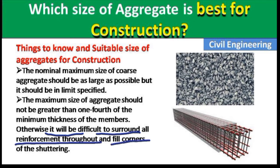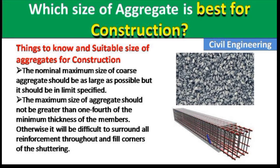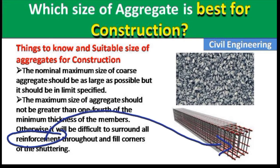Otherwise it will be difficult to surround all the reinforcement and fill the corners of the shuttering. If we use a larger size of aggregate in members like beams, slabs, or columns, the aggregate will not reach the corners of the shuttering and it will affect the strength of the concrete. Reinforcement here means the steel rods used in the structural member.